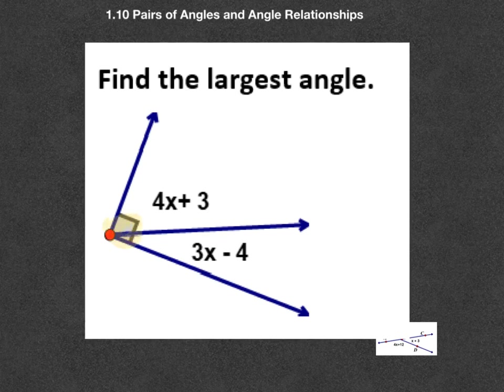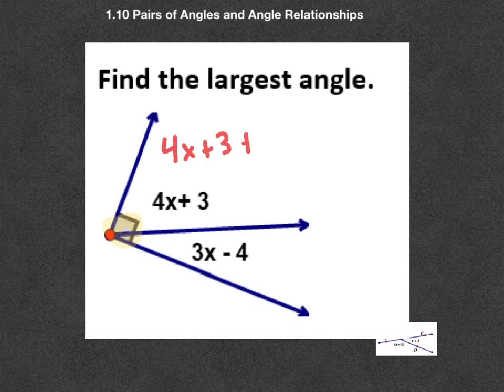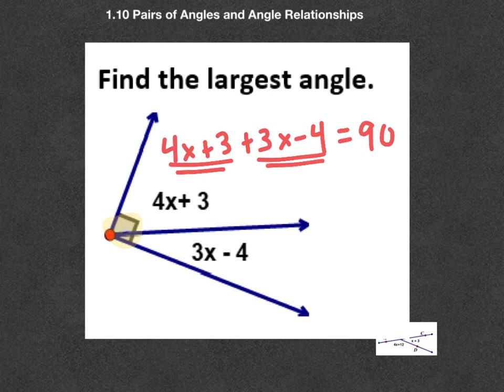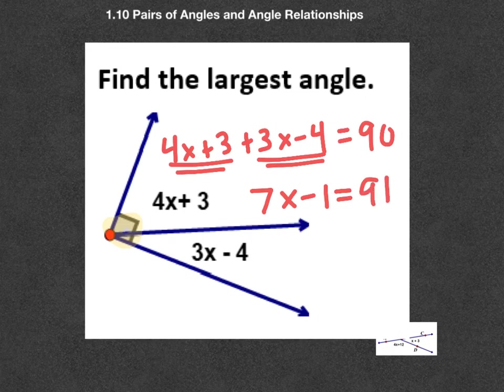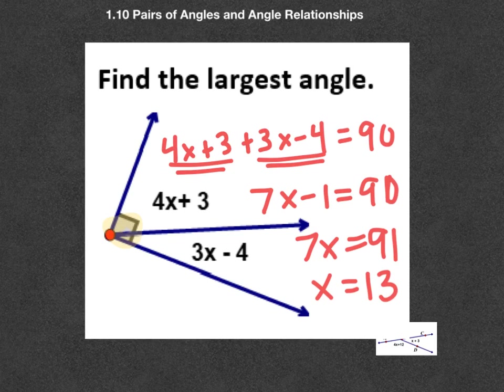Another example here, this happens to be a set of complement angles. Why? Because this symbol means 90. So if I was solving this particular problem, I would say 4x plus 3 plus 3x minus 4 equals 90. I'm not setting them equal to each other because they're not equal to each other. They're equal to 90. So this would become 7x minus 1 equals 90. And then 7x equals 91, and x equals 13 would be the value.